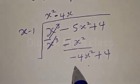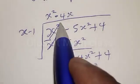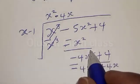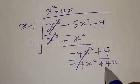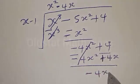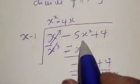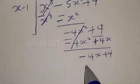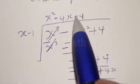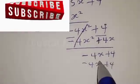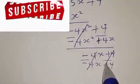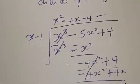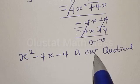Now s goes into minus 4s squared giving minus 4s. And minus 4s times s minus 1 gives minus 4s squared plus 4s. Multiplying by negative and subtracting, we are left with minus 4s plus 4. Then s goes into minus 4s giving minus 4. And minus 4 times minus 1 gives plus 4. Subtracting gives 0 remainder. Therefore our quotient is s squared minus 4s minus 4.